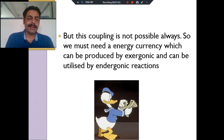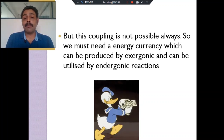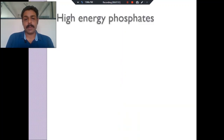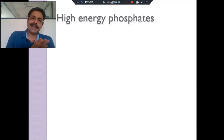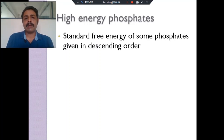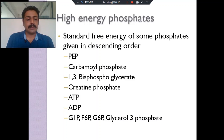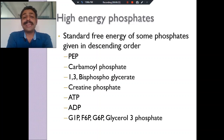This ATP will be used to do anabolic reactions like muscle activity. What are these energy currencies? They are usually phosphates. Why phosphate? The phosphoric acid linkage is very high energy and can be easily broken, but it liberates energy. What are the common phosphates? Phosphoenol pyruvate, carbamyl phosphate, 1,3-BPG, creatine phosphate, ATP, ADP, glucose-1-phosphate, fructose-6-phosphate.